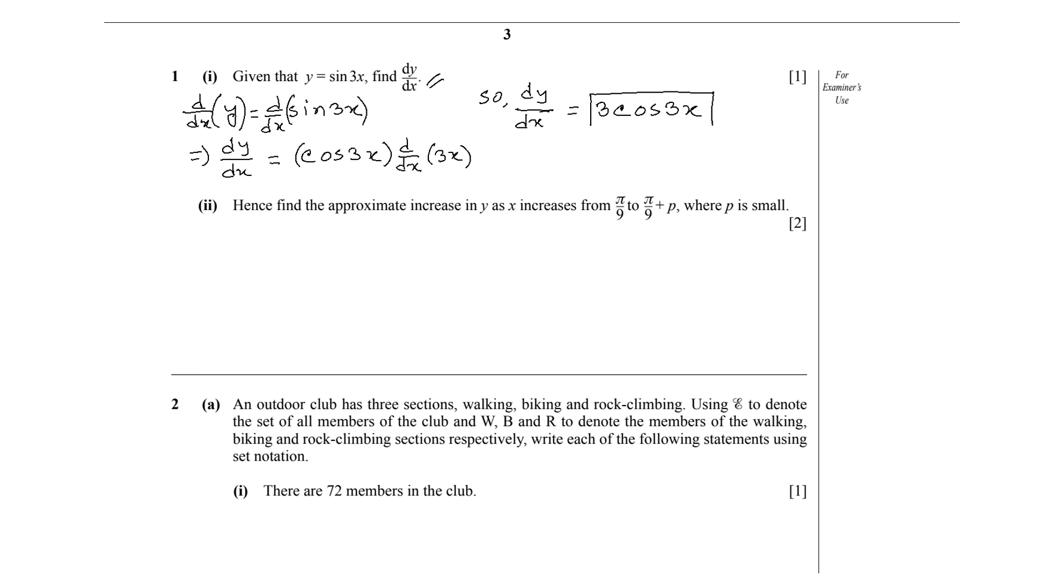Now for the second part of the question, we need to find the approximate change or increase in y as x increases from the value π/9 to the value π/9 + p, where p is very, very small. So let's begin. We know that for a very small change of x, the rate of change of y with respect to x, that is δy/δx, is equivalent to dy/dx.